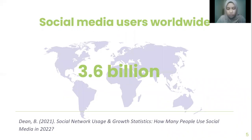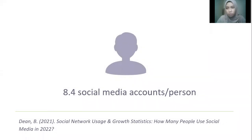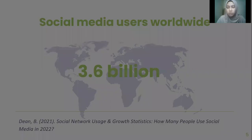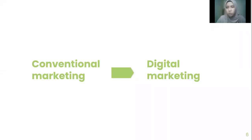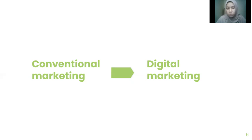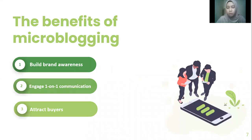At least one person has 8.4 social media accounts in 2020. Also in the same year, social media users reached up to 3.6 billion users worldwide, and that is such a big number. As the digital industries grow super rapidly, marketing activities are also shifting from conventional marketing to digital marketing. Companies are using digital marketing to get a closer look at their target audience and also to engage with them.